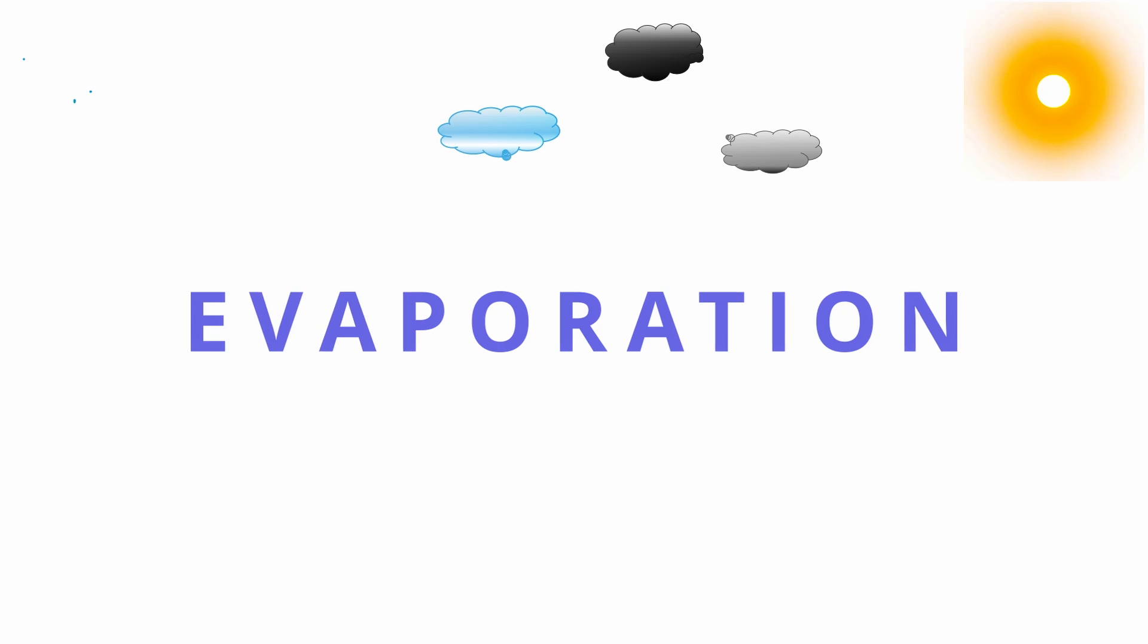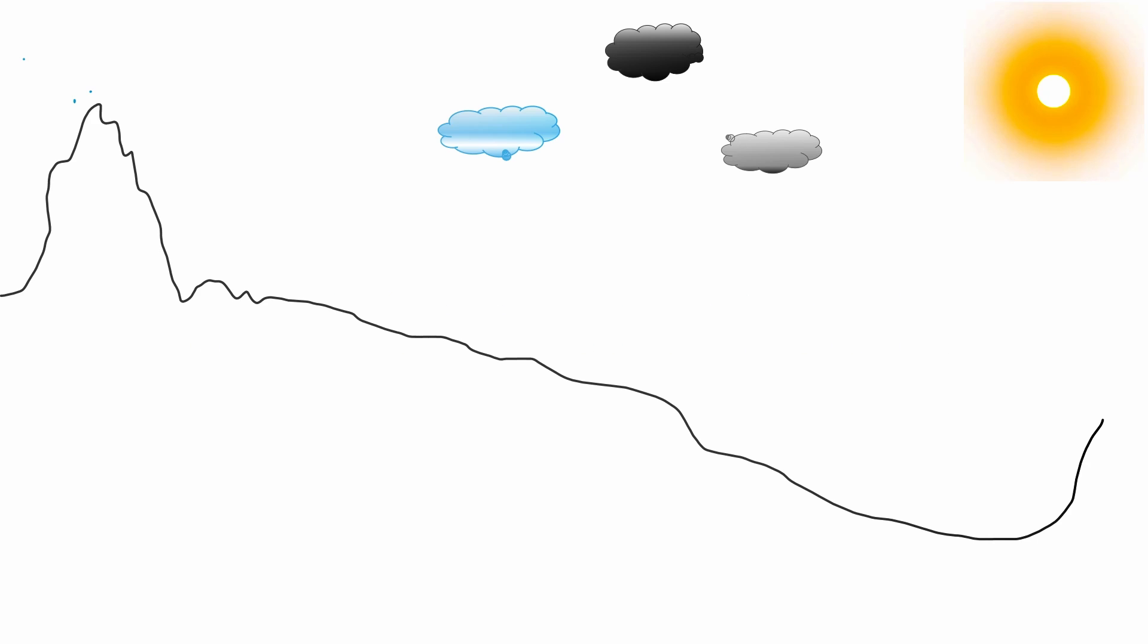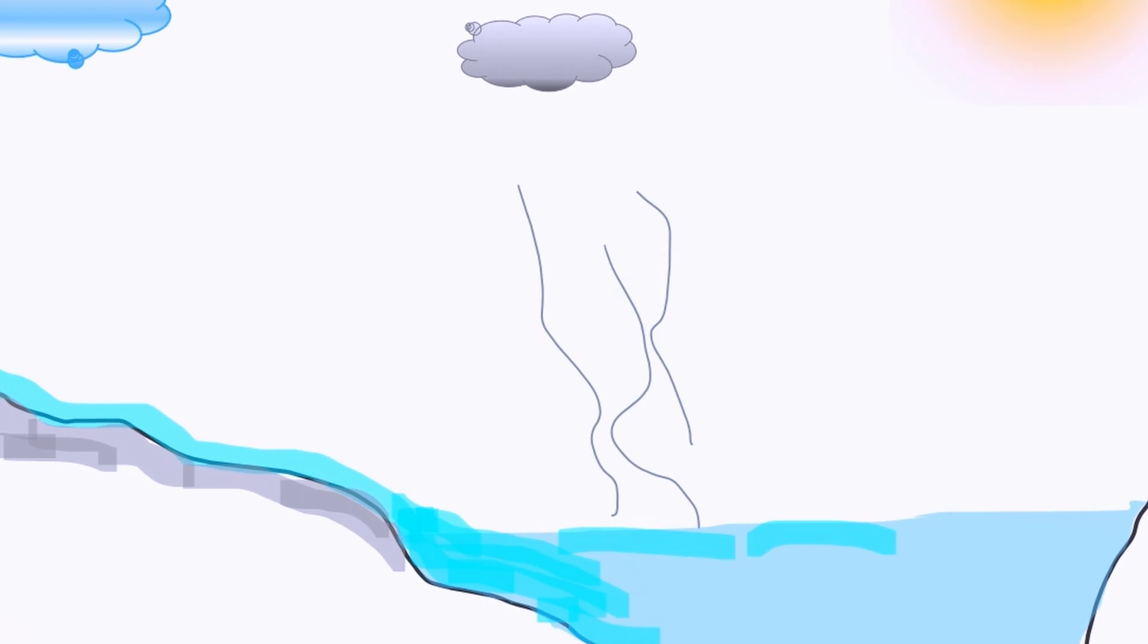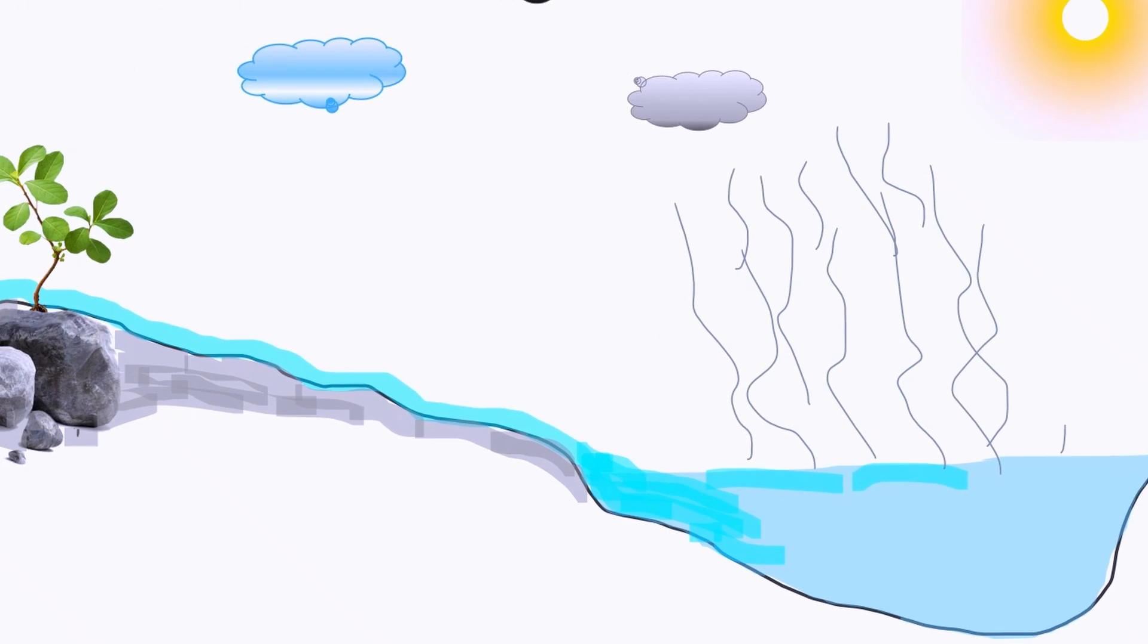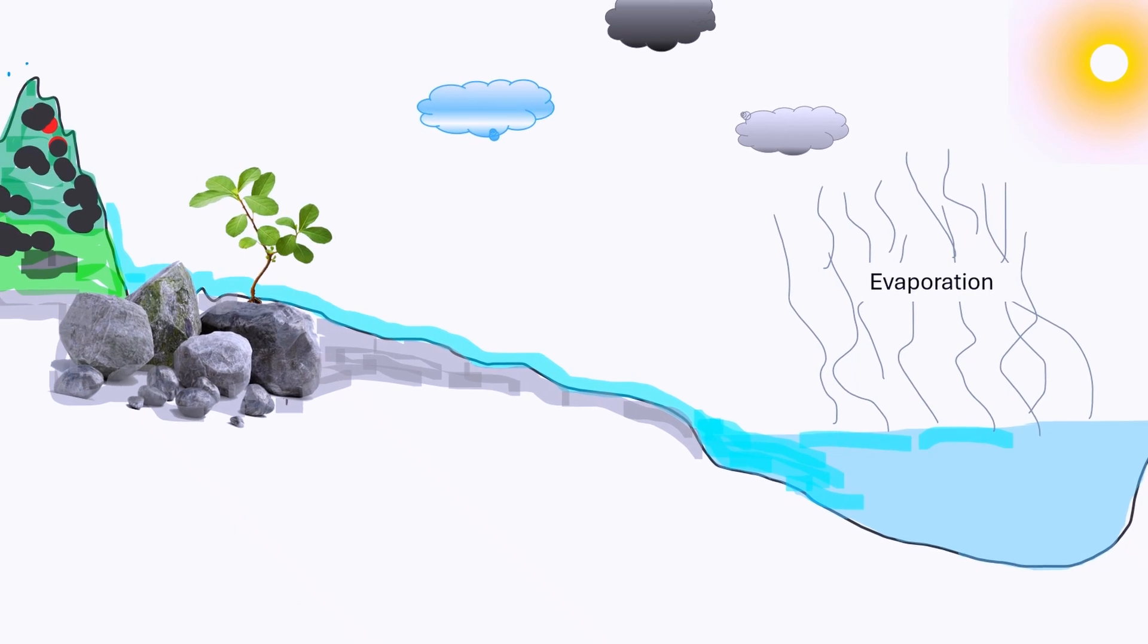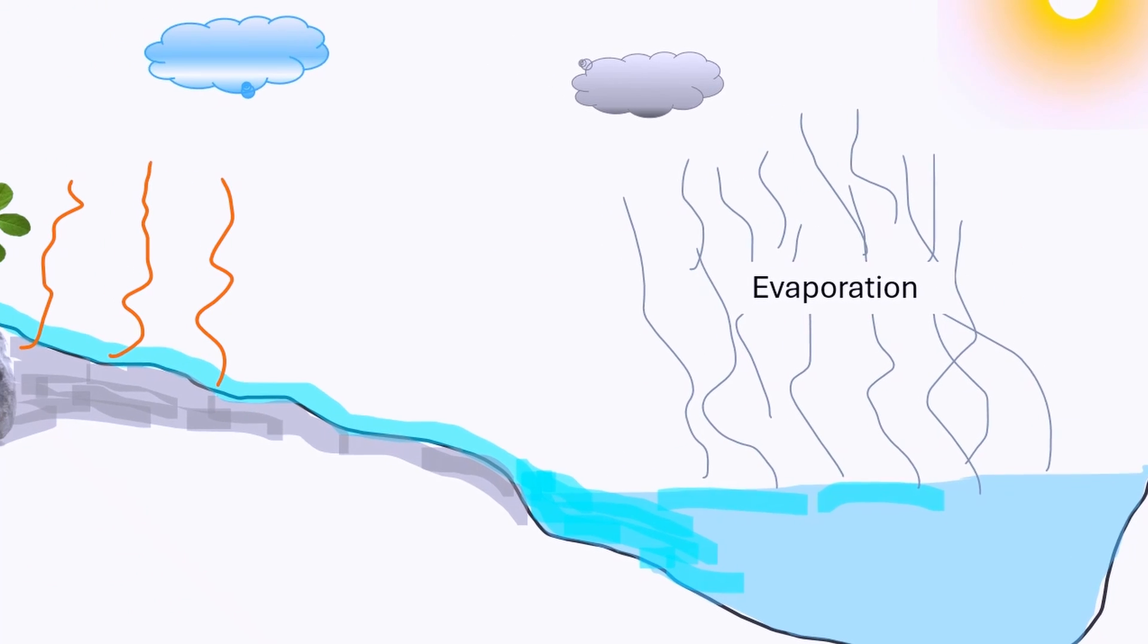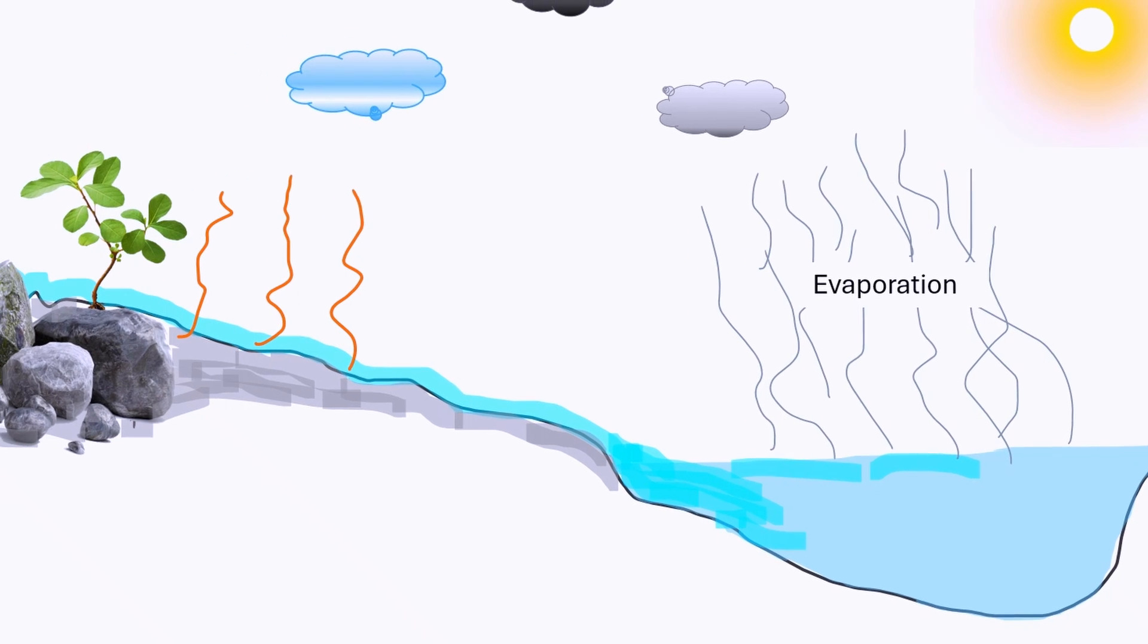Evaporation: The water cycle is powered from the energy emitted by the sun. This energy heats water in the oceans and seas. Water evaporates as water vapor into the air. So, the water cycle begins with the process of evaporation, where solar energy from the sun heats up bodies of water: oceans, lakes, rivers, and even moist soil.